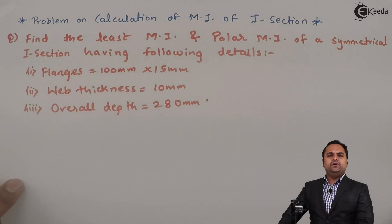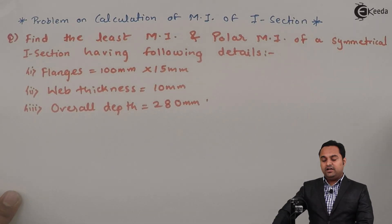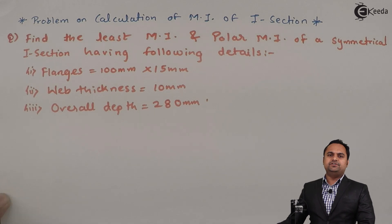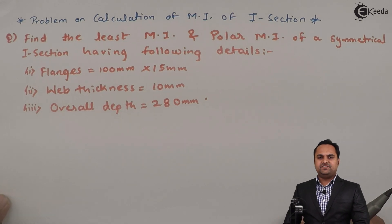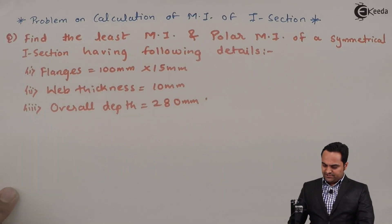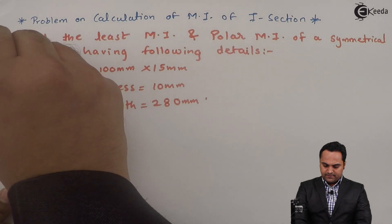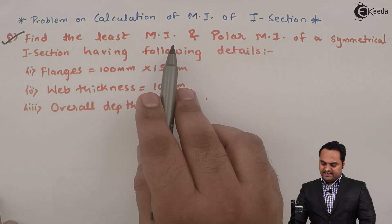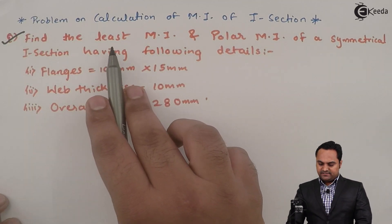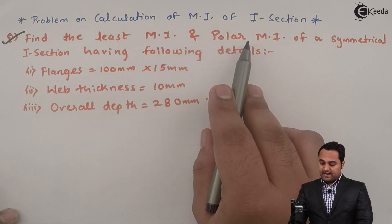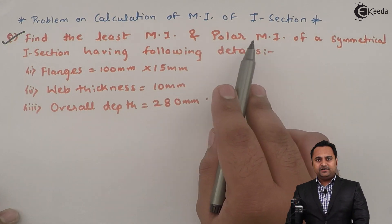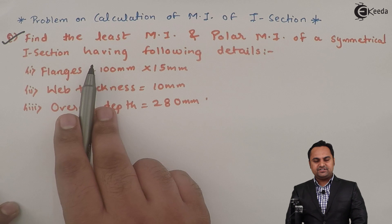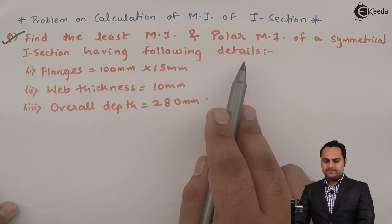Hello friends, in this video we will see a problem based on calculation of moment of inertia for an I-section. We have a question: find the least MI, that is least moment of inertia, and polar MI, that is polar moment of inertia, of a symmetrical I-section having the following details.